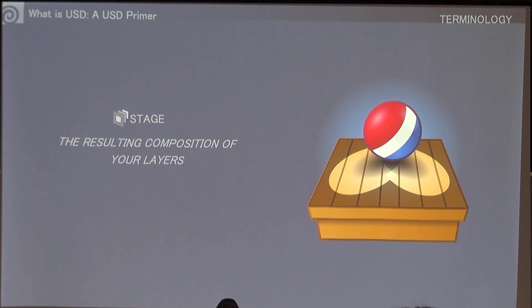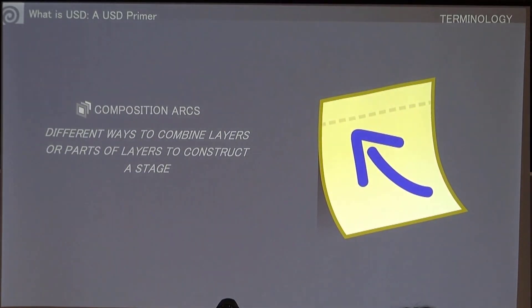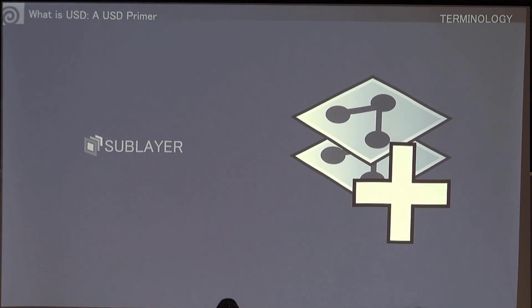The next concept is called composition arcs. That's simply the different ways that we combine these layers or parts of layers to build that stage. The first one is called sublayer. This is probably the one you're going to hear the most and maybe use the most. We'll take a look at some slides of examples and then we'll dive in and see how that works.